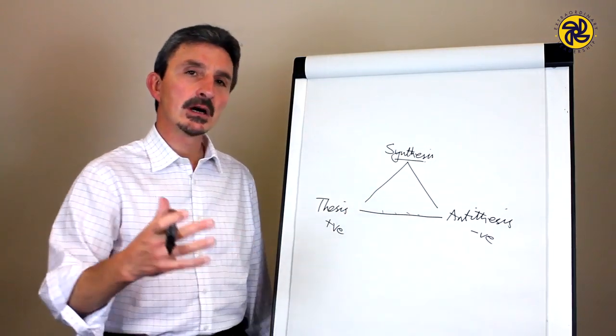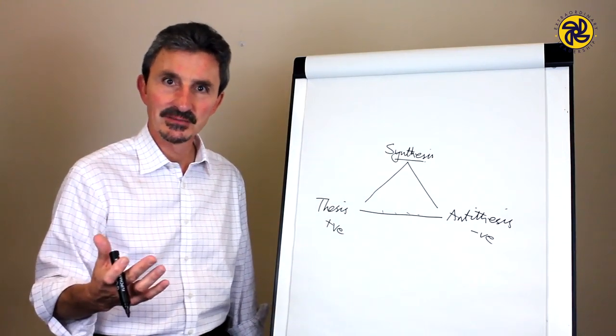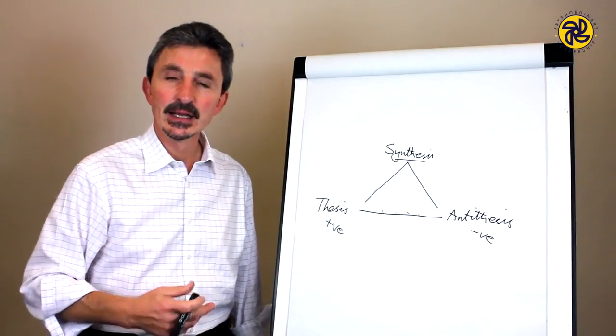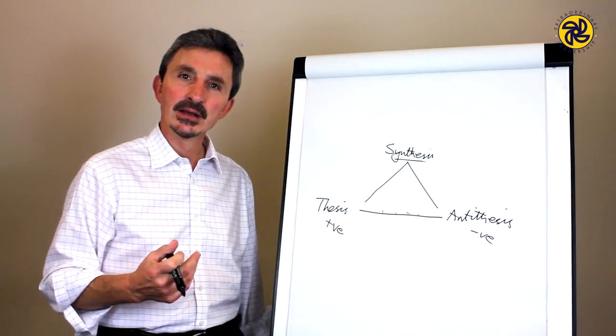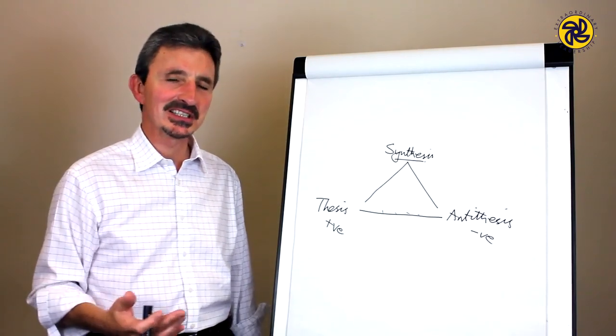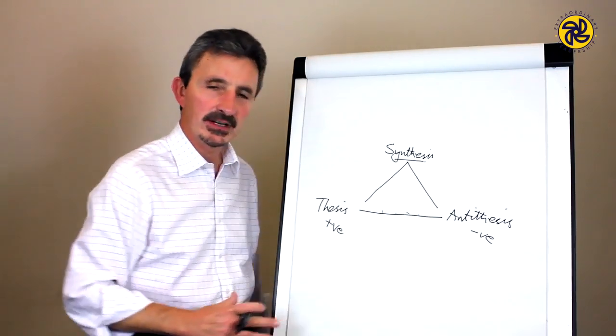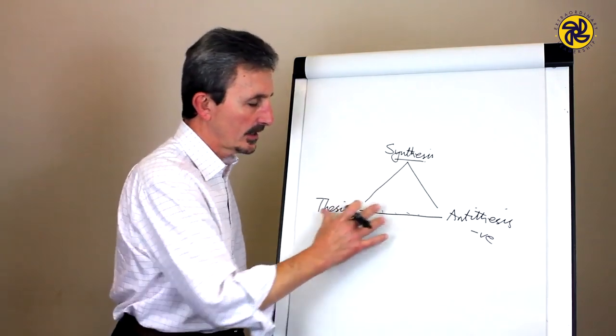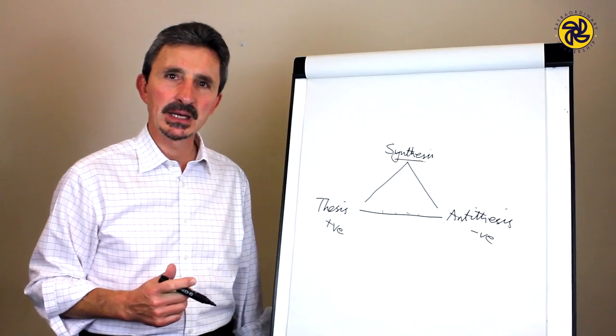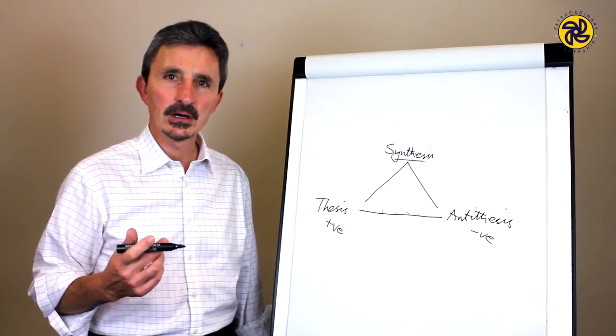This law of three is common to all the great traditions. The Hindus, they call it Brahma, Vishnu and Shiva. In the Christian theology, there's Father, Son and Holy Ghost. In Hegelian dialectics or Marxian dialectics, there are the three things, just as there are in Greek and in science. So it's a fundamental aspect of nature, of creation.